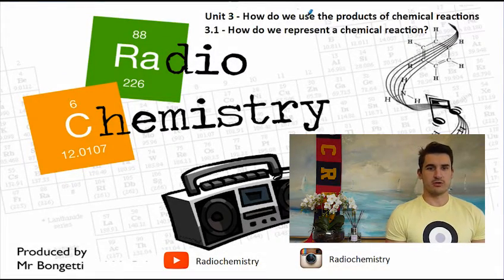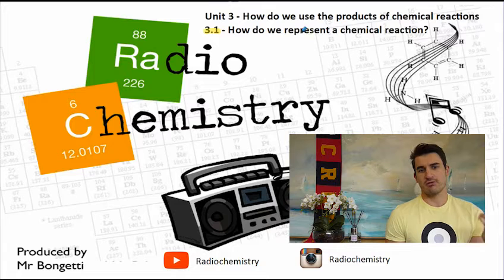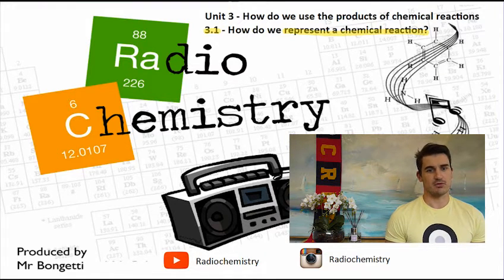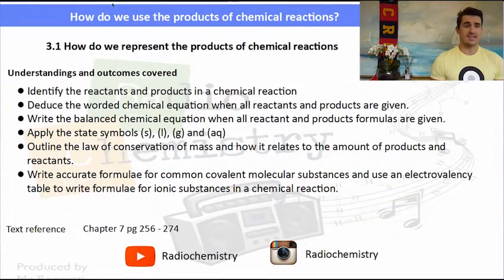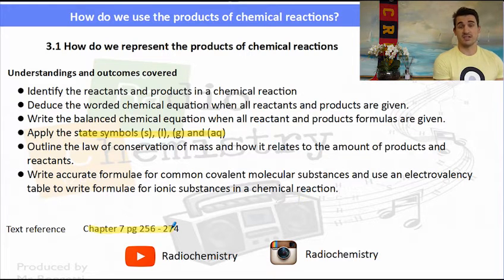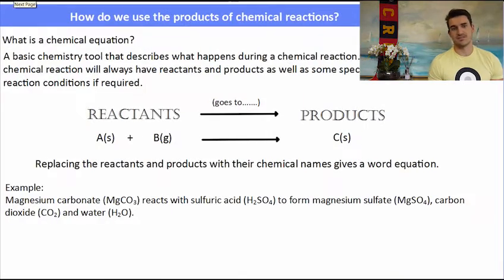So unit 3, how do we use the products of chemical reactions, 3.1, how do we represent a chemical reaction. The understanding and outcomes for year 10 are: identify reactants and products in a reaction, deduce the word and chemical equations when you're given the formulas, be able to apply the states solid, liquid, gas and aqueous, understand the law of conservation of mass and be able to write accurate formulas for substances that we covered in topic 1, the periodic table. Make sure you check out the text ref page 256 to 274.